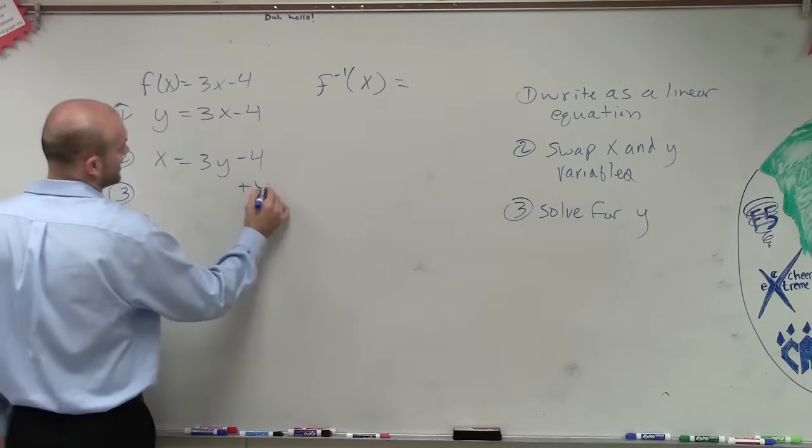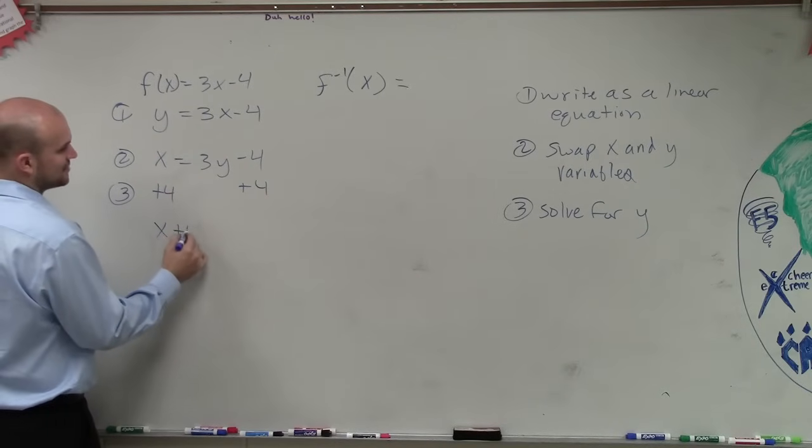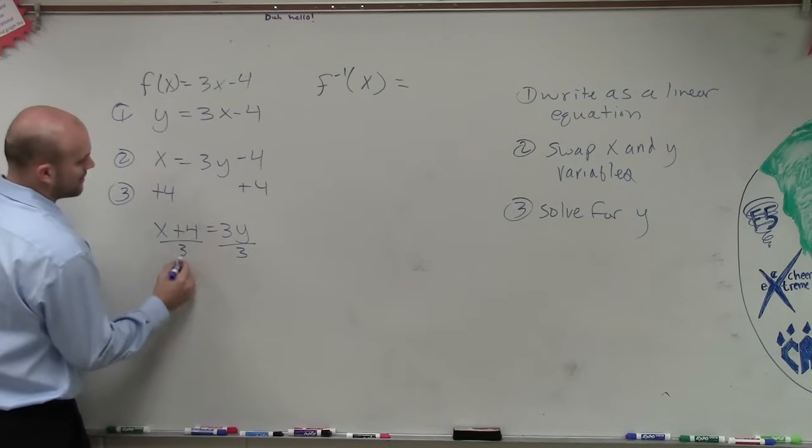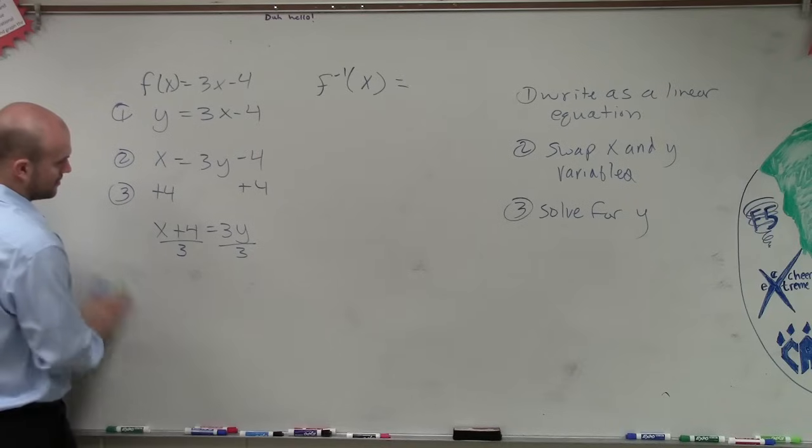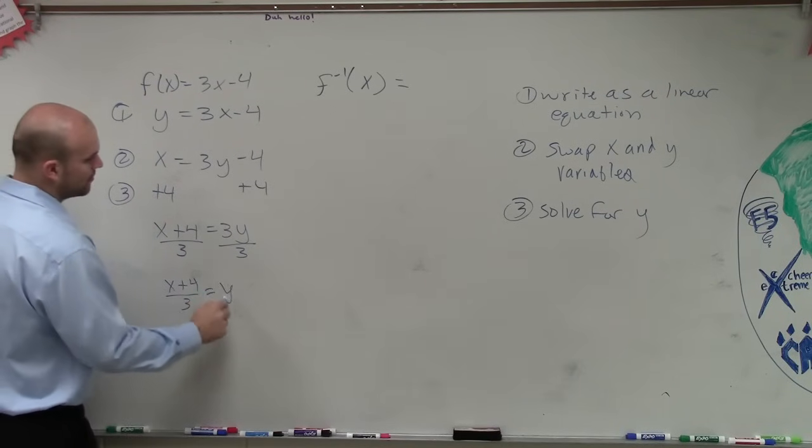So you add four to both sides. And remember, this is a literal equation. So you're not going to be able to get a value. So it would be x plus 4 equals 3y. Then divide by 3. So therefore, we have x plus 4 divided by 3 equals y.